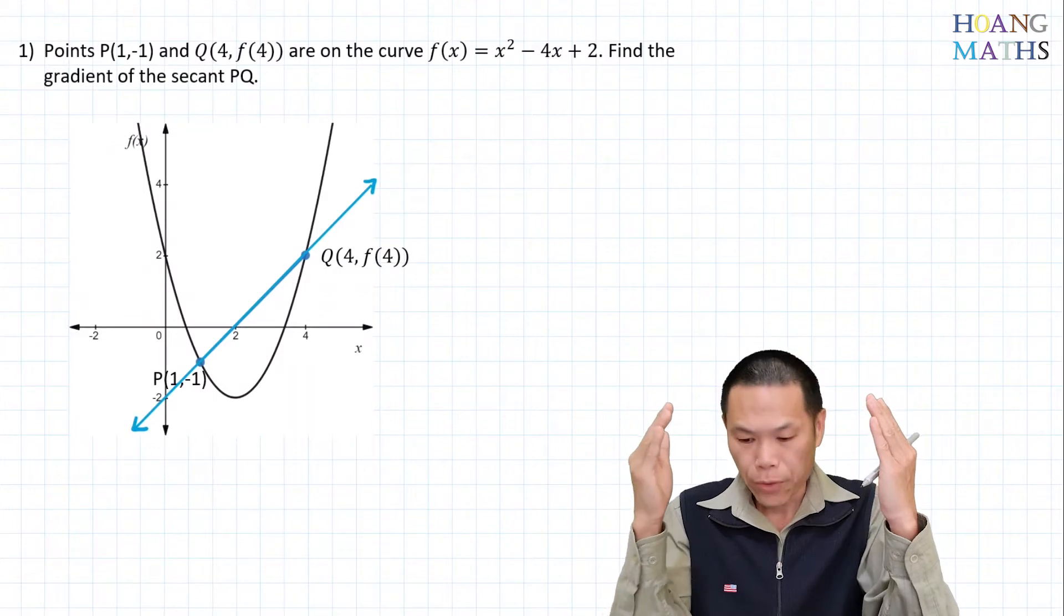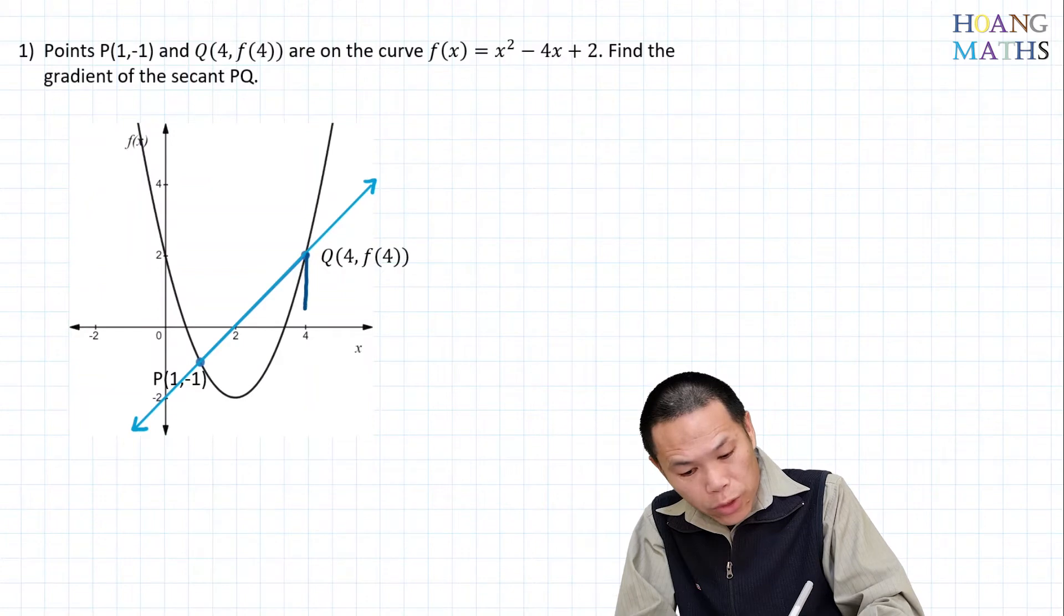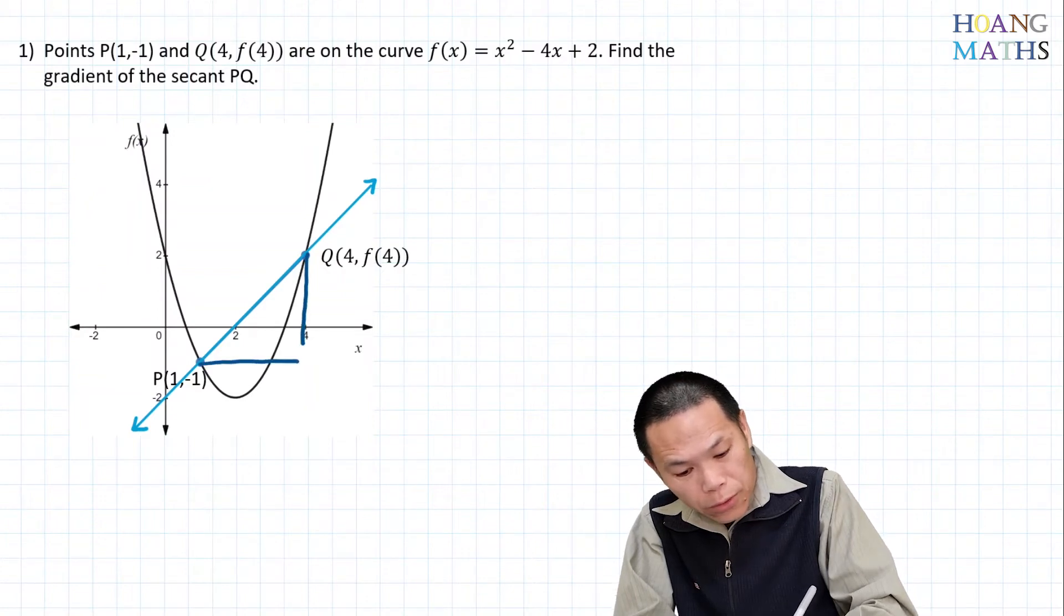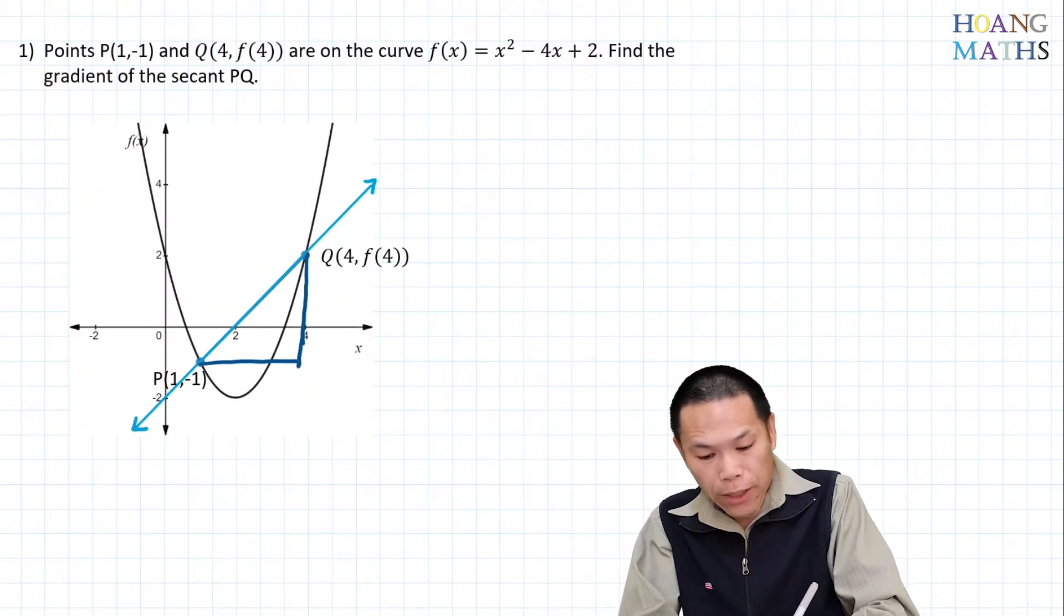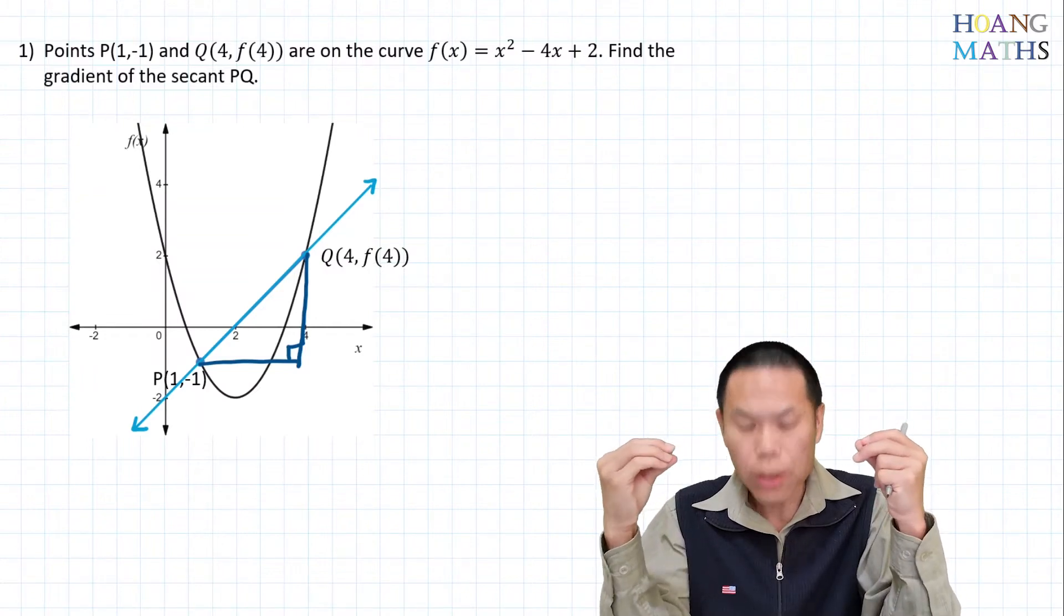Example: We need to find the gradient of this secant here, which is PQ. This gradient will give you the rate of change between point P and Q. Remember the gradient formula: m of PQ equals (y₂ - y₁)/(x₂ - x₁).